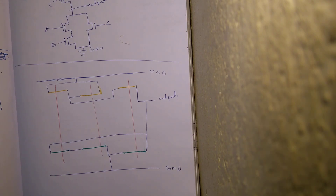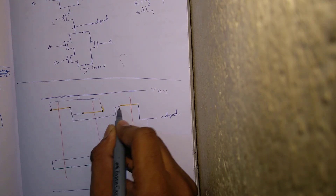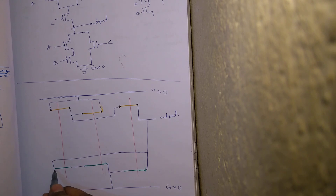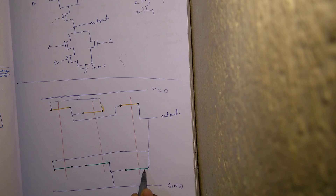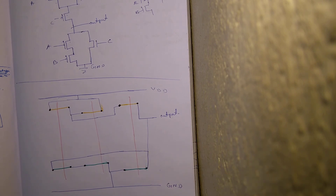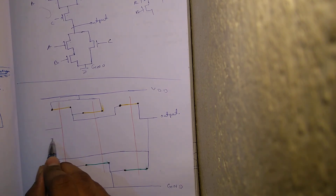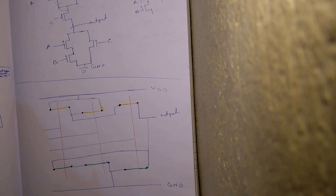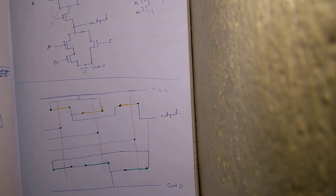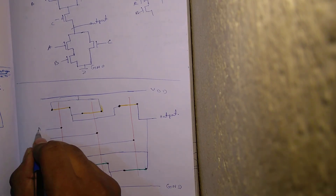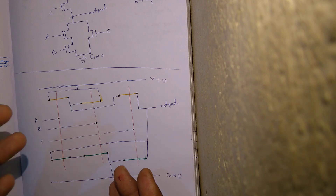I am done with the stick diagram. Let us indicate the metal contacts. From the polysilicon, you need to compulsorily take a metal contact and indicate the inputs. This is my A, this is my B, and this is my C. This is the final conventional stick diagram. If you draw like this, it will definitely give you marks — trust me.